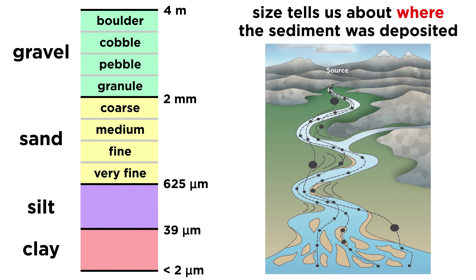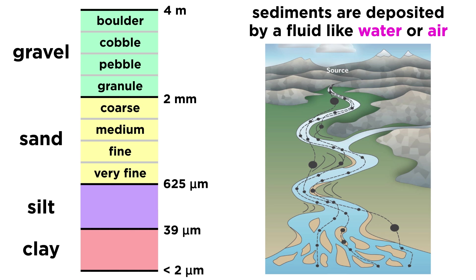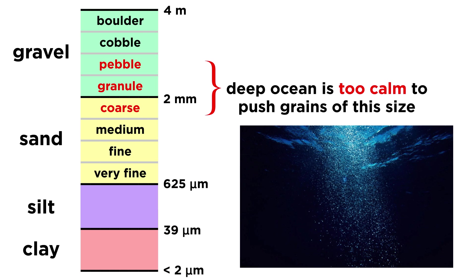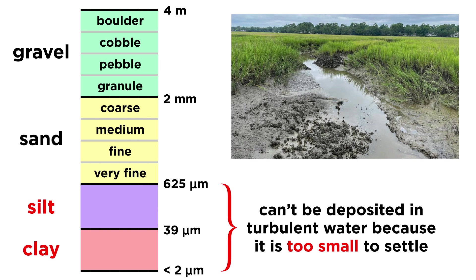The grain size of a sedimentary rock can tell you a lot about where it was deposited. This is because most sediments are deposited by a fluid, such as water or air, and the maximum grain size that a fluid can transport is directly tied to its velocity. For example, if you have a rock composed of pebbles and coarse sand, you know that it could not possibly have formed in the deep ocean, because the water is much too calm there. The same logic applies to mud, which cannot be deposited in turbulent water — rather, it is picked up and carried away by such water, unable to be deposited until the water slows down.